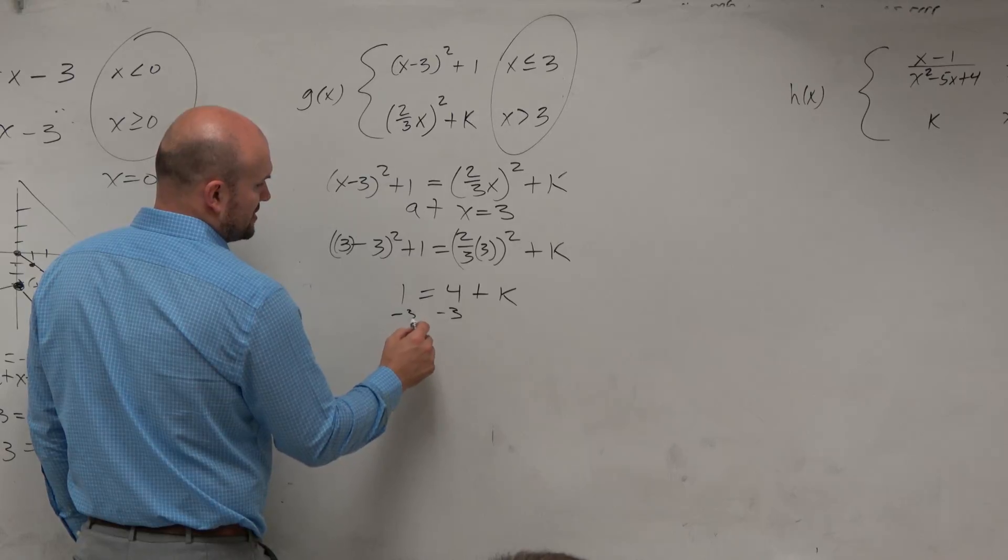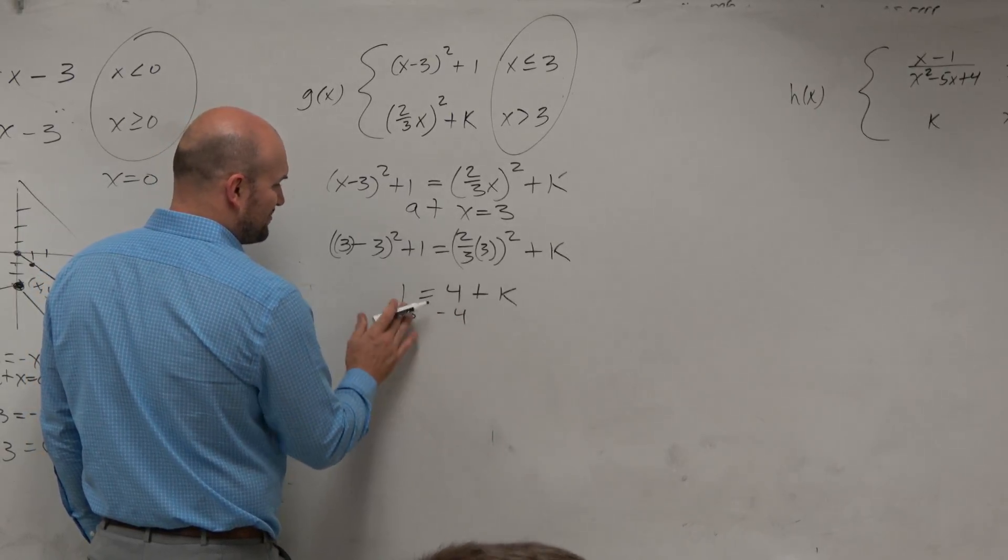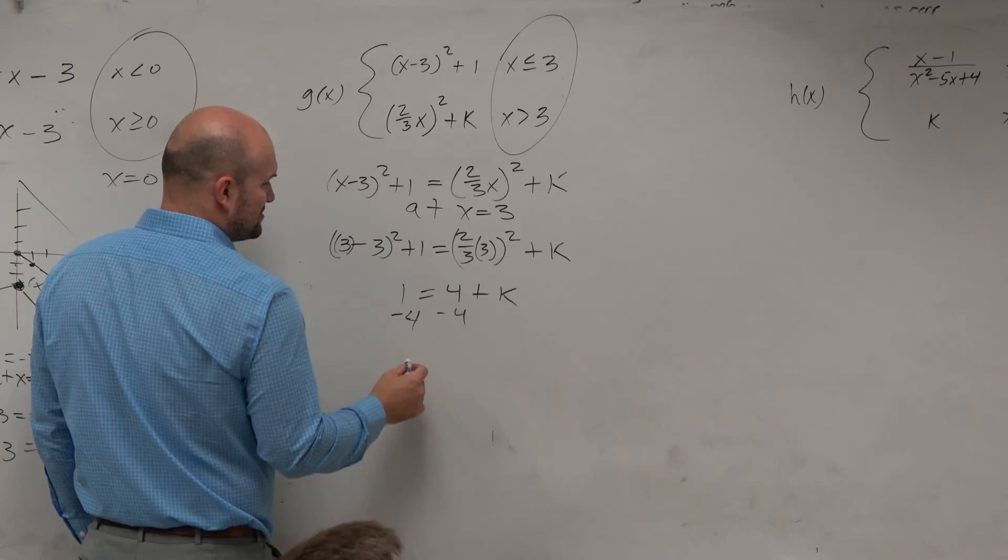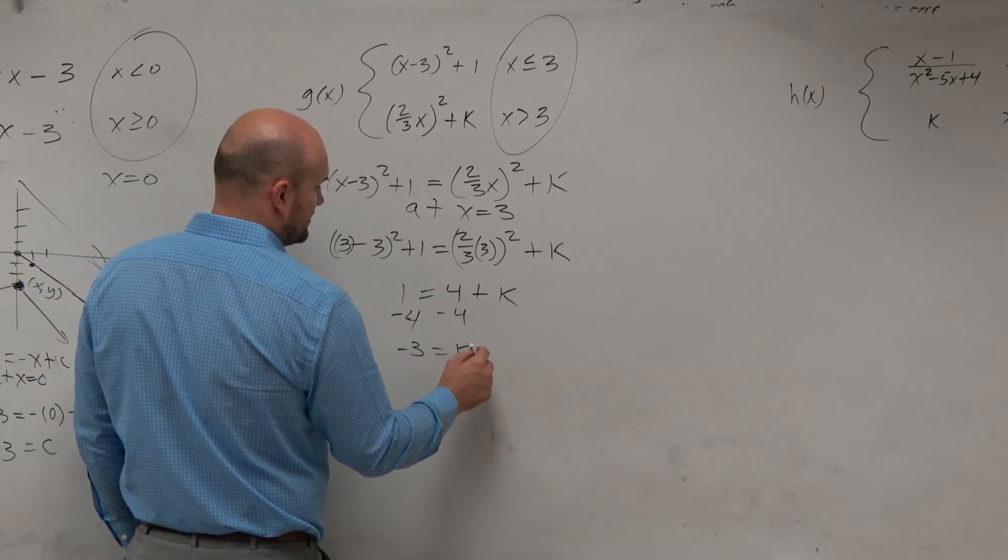Subtract 3, subtract 4. My brain is going an extra step. Subtract 4, negative 3 is equal to k.